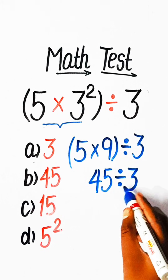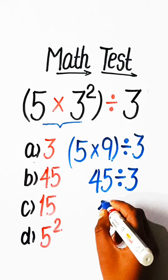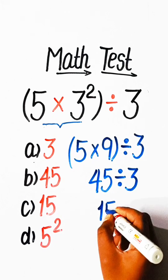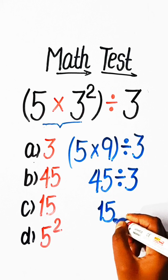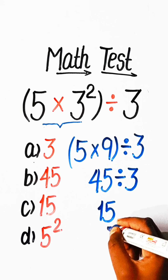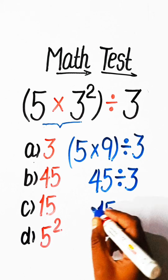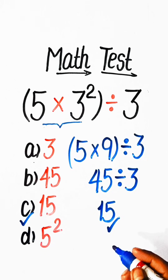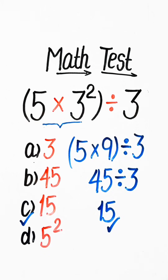45 divided by 3 is 15. So Option C: 15 will be our correct answer. If you like my videos, please like, share, and subscribe to the channel.